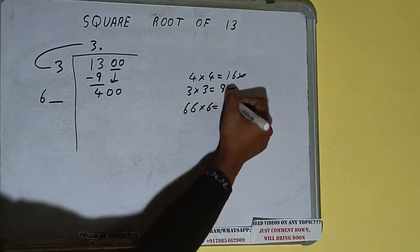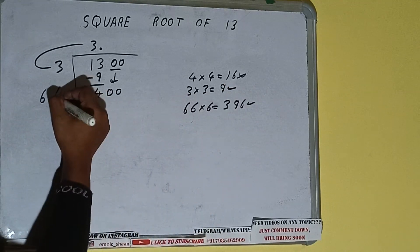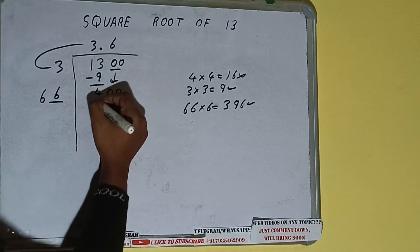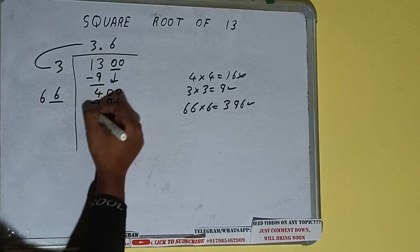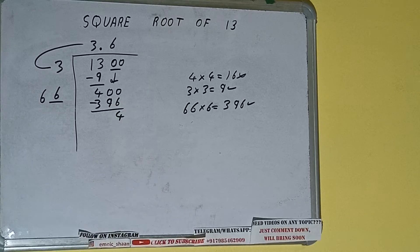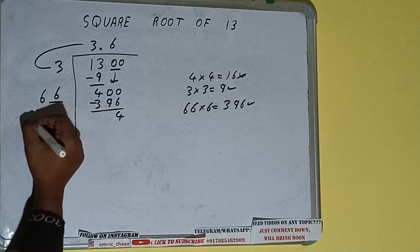And it will be 396, which is good to take. So 6 here and 6 here. 396 subtract, 4 will be left. Now 66 into 6, so add both. So 66 plus 6 will be 72.